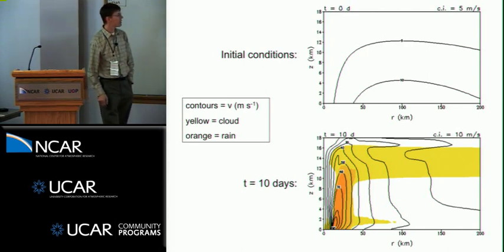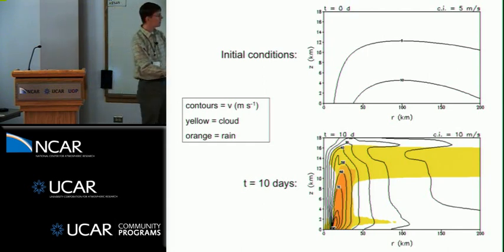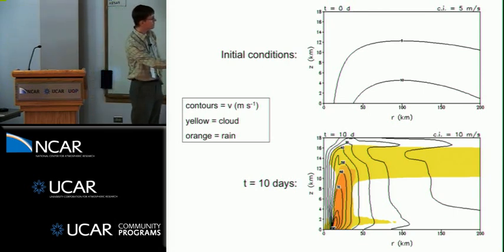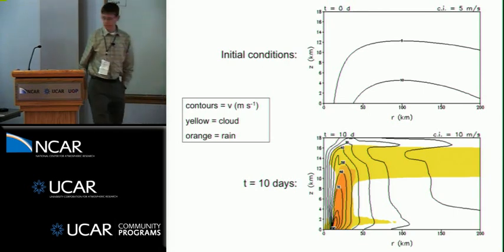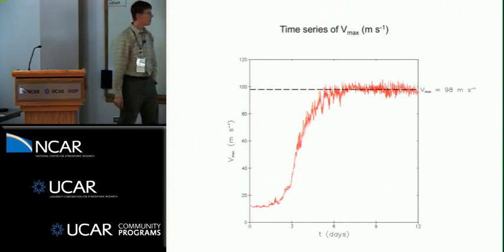And if you run for about 10 days what happens is you end up with a structure that looks like this. The yellow is cloud and the orange is rain, so you start off subsaturated and you end up with clouds and an eyewall that slopes outward and some fairly realistic features. There's a mostly cloud-free eye.